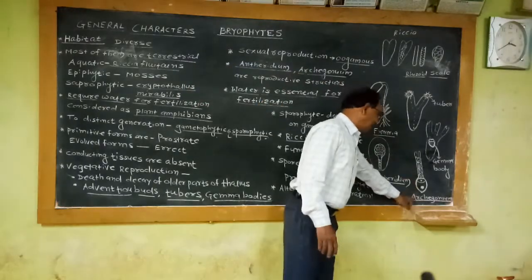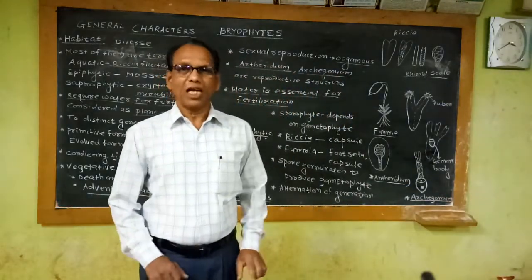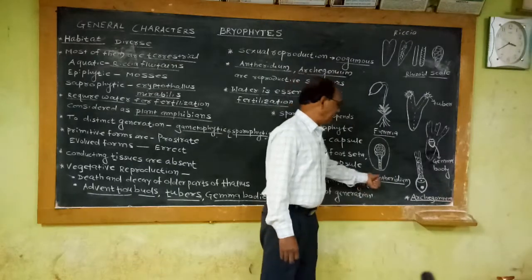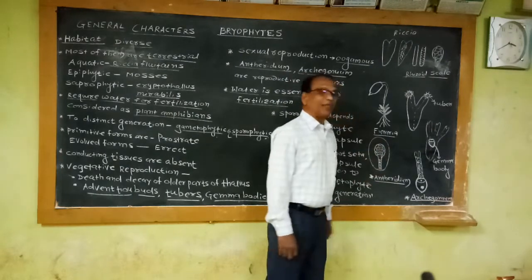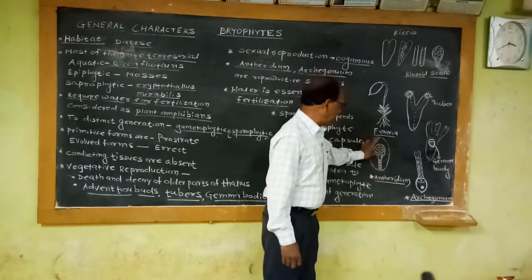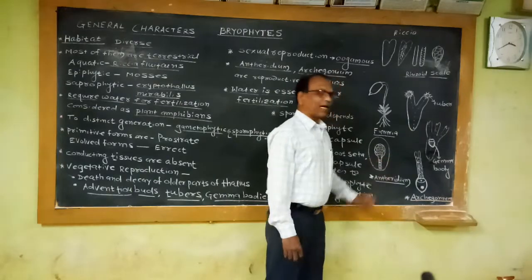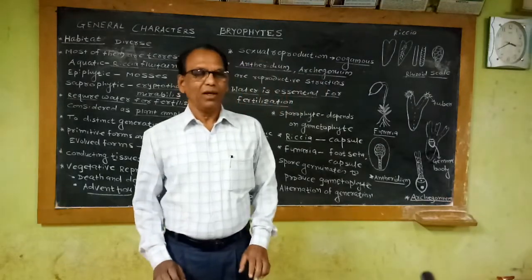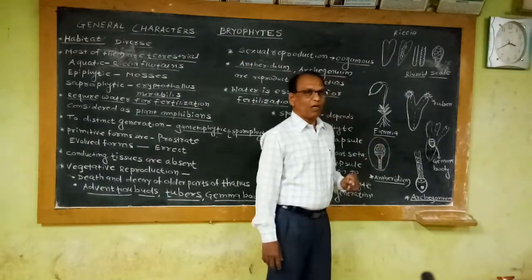The male reproductive structure in all bryophytes is known as the antheridium, and the female reproductive structure is the archegonium. These are developed endogenously — internally — in the thallus tissue. When the plant becomes mature, it produces the male and female reproductive structures in the form of antheridia and archegonia inside the thallus tissue. The antheridium is a more or less club-shaped structure with a multicellular stalk and a spherical body enclosed by a sterile jacket layer.